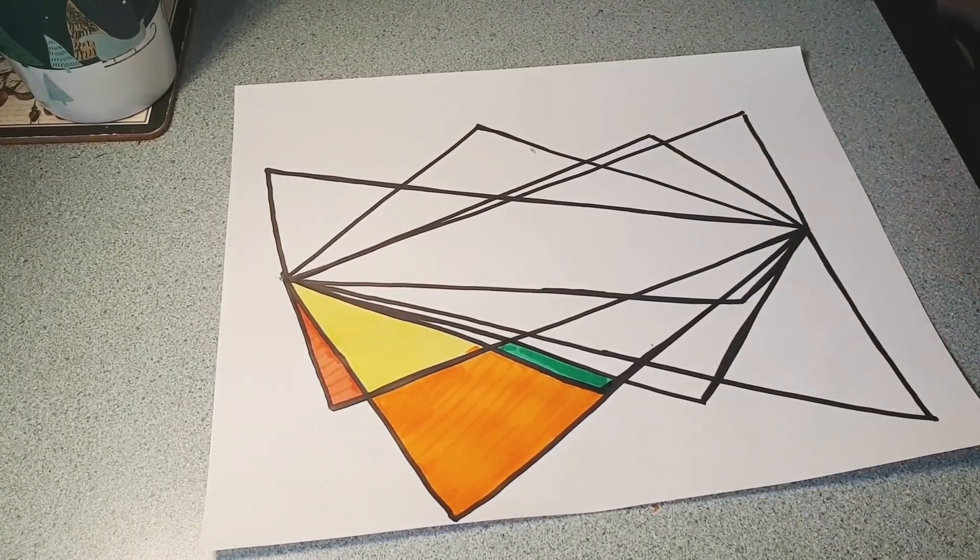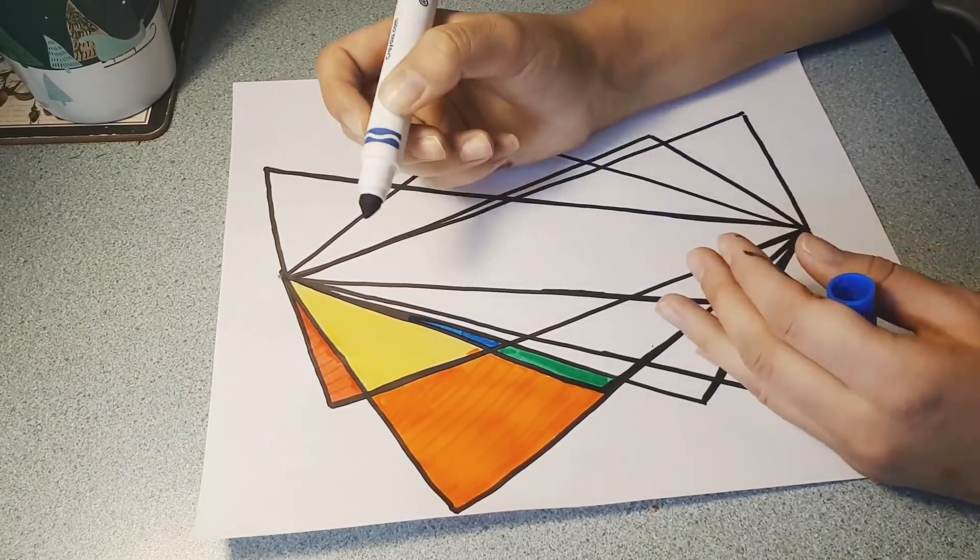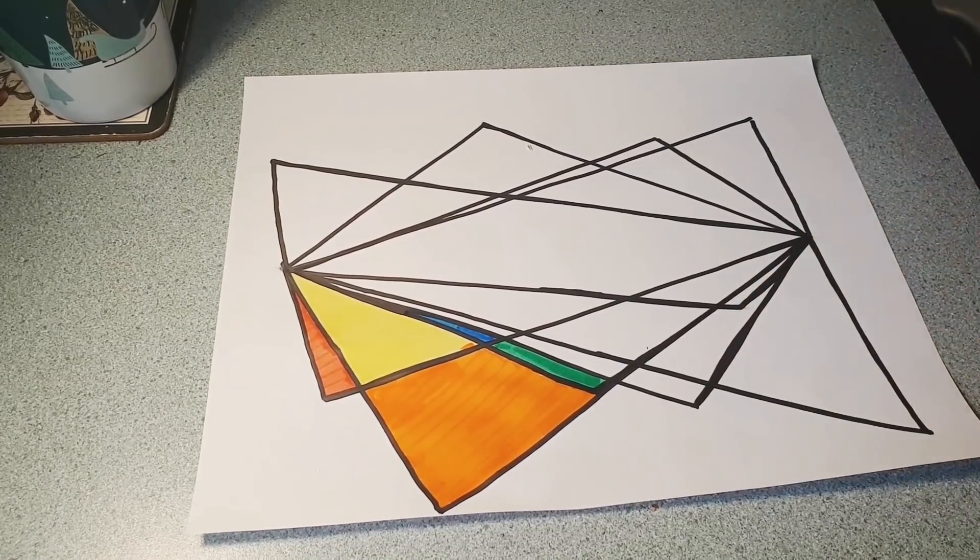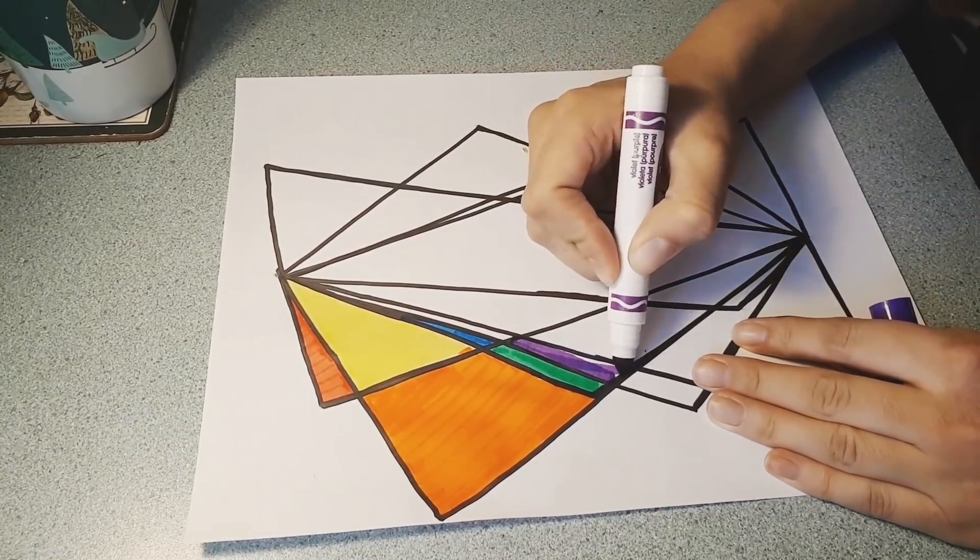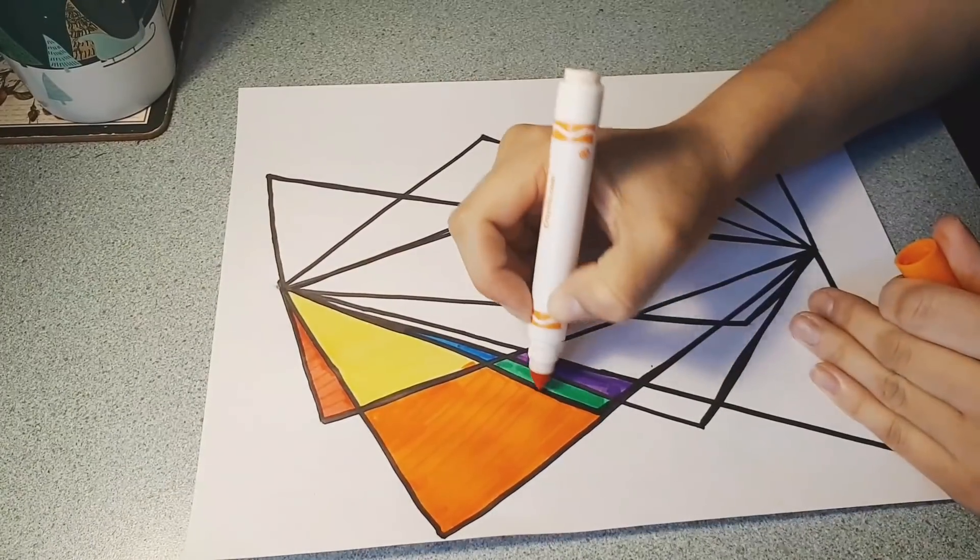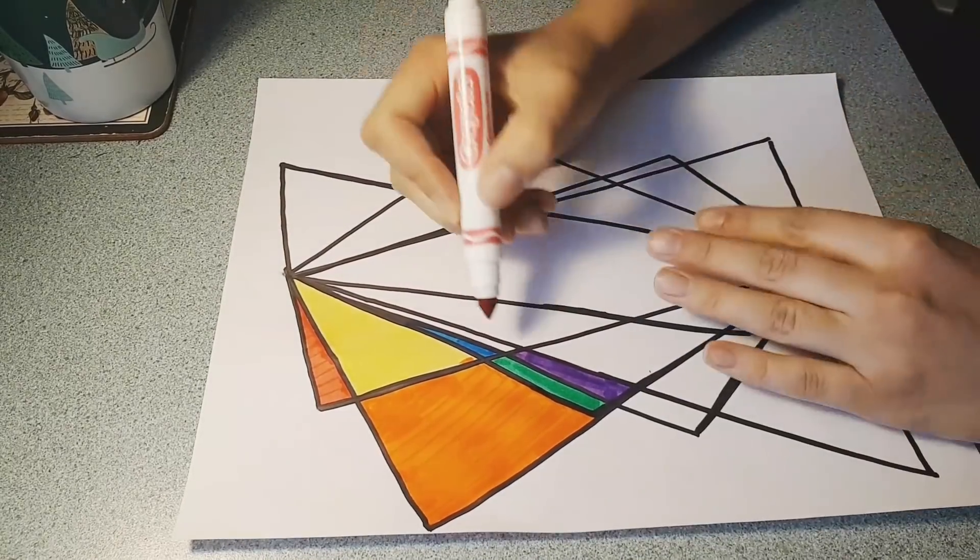As I color in my shapes, I wonder how many shapes in total are there. If I had added more dots at the beginning, would I have more shapes? If I had less dots, would I have less shapes? I wonder if I could count all the shapes on my page.